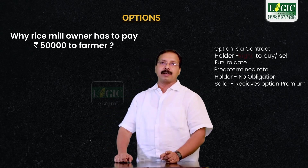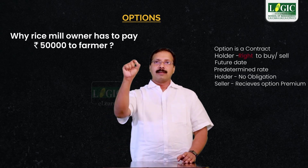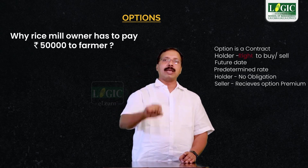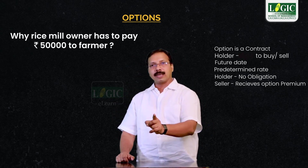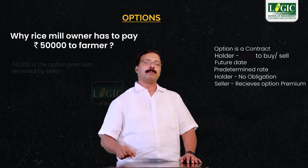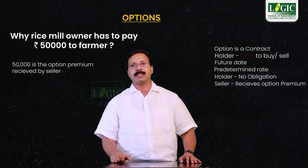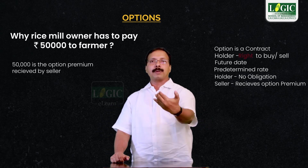So in our example, the 50,000 which Keishu demanded from Normal Rice, that means the rice mill owner, is an option premium.